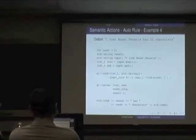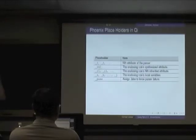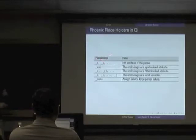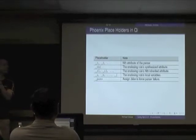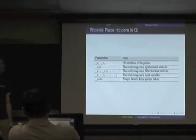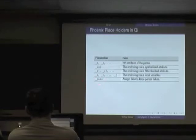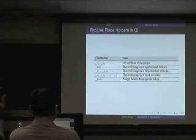We parse 'I love Boost Phoenix' and print that it has 20 characters. The placeholders: _1, _2, _3 refer to elements of the sequence. _val lets us force the parser to fail by setting it to false — for example, if a parsed number is not prime.